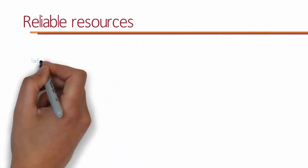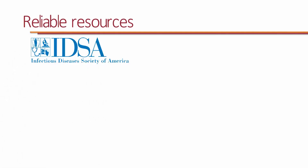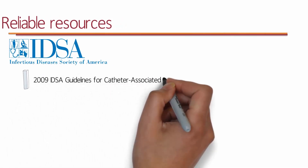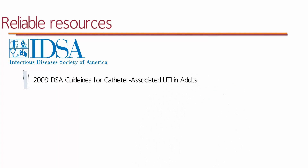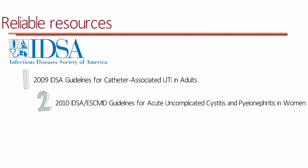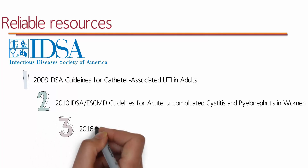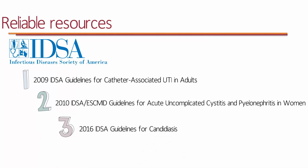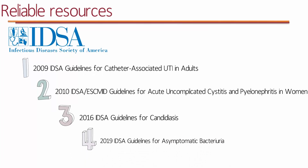IDSA is the Infectious Diseases Society of America, the organization in the United States that develops clinical practice guidelines for infectious diseases. The first guideline to be aware of is the 2009 IDSA guidelines for catheter-associated urinary tract infections in adults, which clinicians typically refer to for complicated UTIs. The second is the 2010 IDSA guidelines for acute uncomplicated cystitis and pyelonephritis in women. The third is the 2016 IDSA guidelines for candidiasis, which includes recommendations for candiduria — urinary infection caused by candida, a fungal infection. The last is the 2019 IDSA guidelines for asymptomatic bacteriuria.